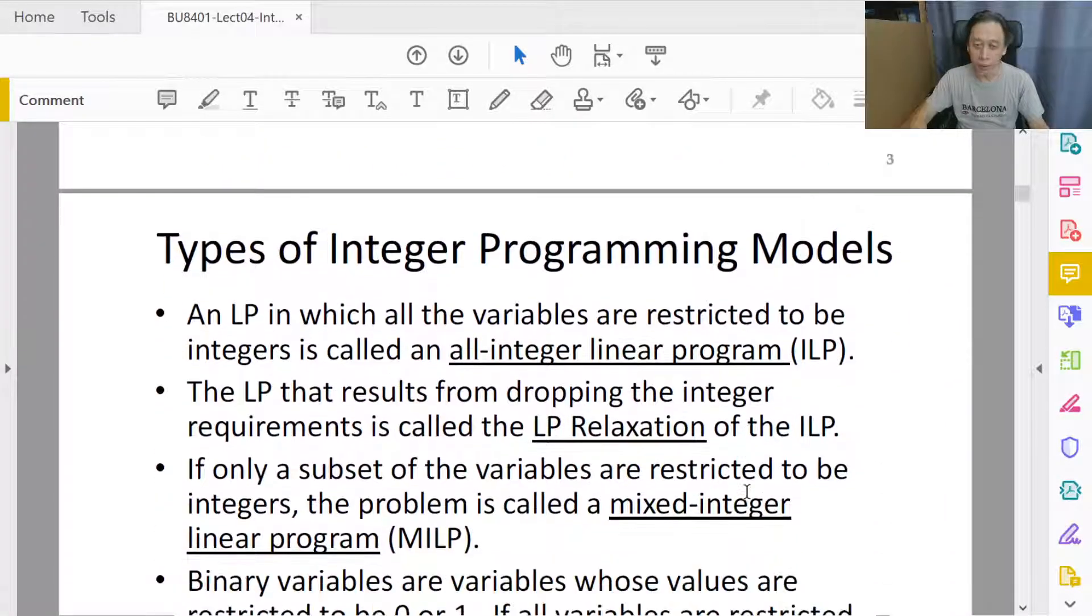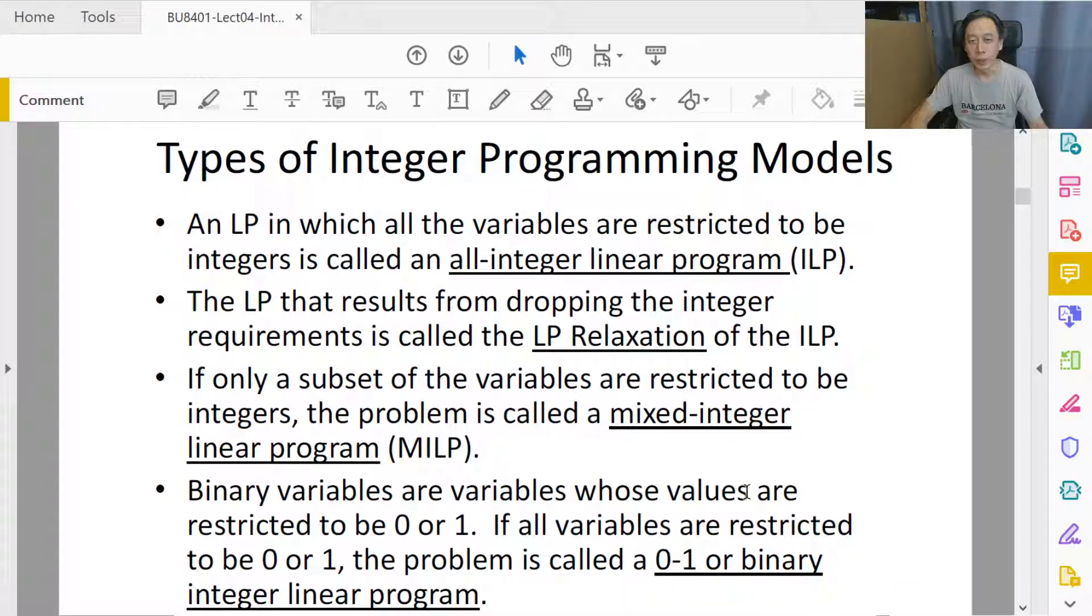Let's learn terminology for integer programming models. When we say all-integer linear program (ILP), that means all the decision variables - the x, y, z or x1, x2, x3 that must be non-negative - are required to be integer. It's not just a linear programming model, but an all-integer one.